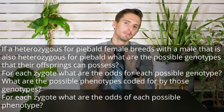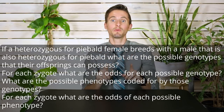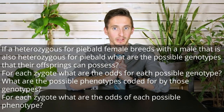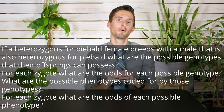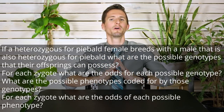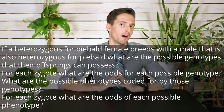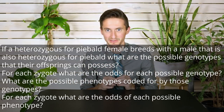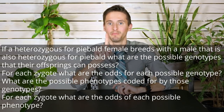Now put your knowledge to the test. Piebald is a recessive trait in ball pythons. If a female heterozygous for piebald — so not a piebald herself — breeds with a male that is also heterozygous for piebald, what are the possible genotypes their offspring can possess? For each zygote, what are the odds for each possible genotype? What are the possible phenotypes coded for by those genotypes, and what are the odds for each possible phenotype per zygote?